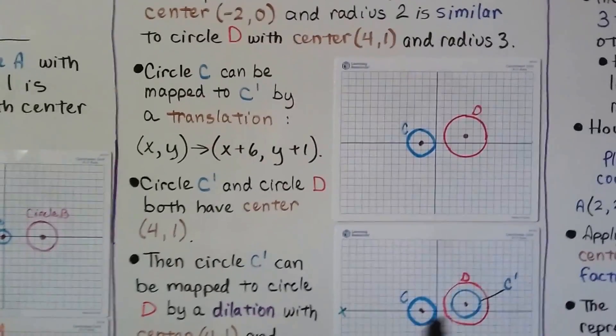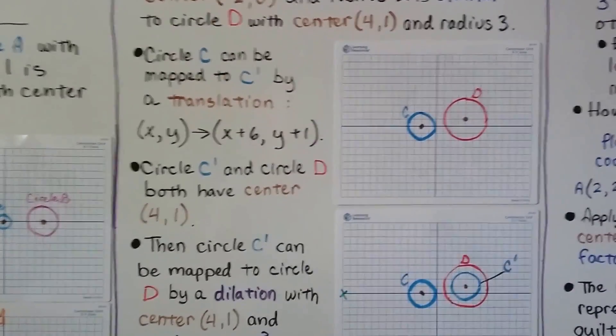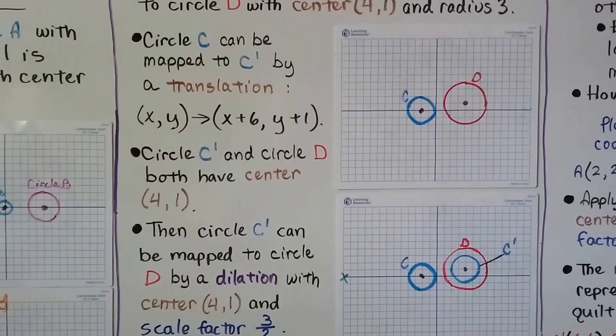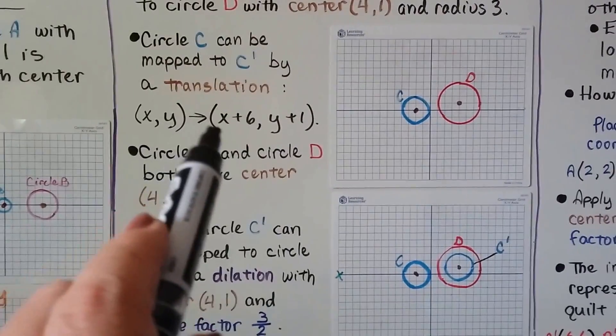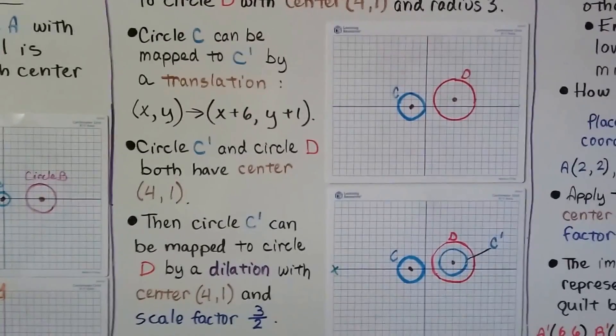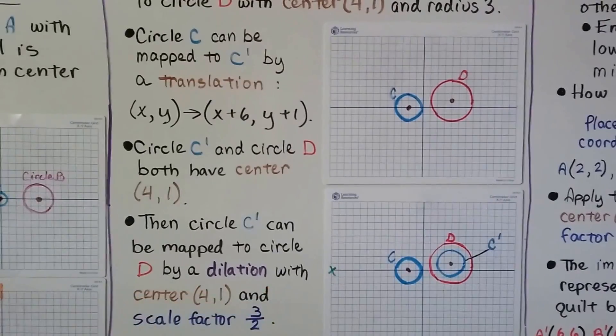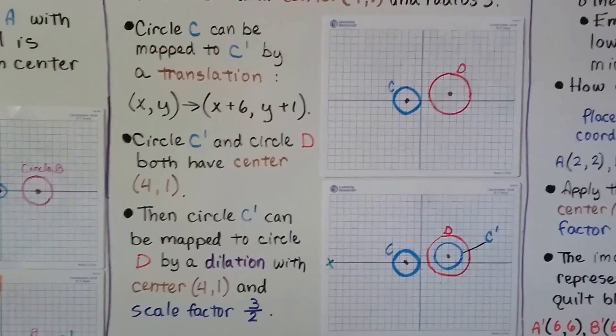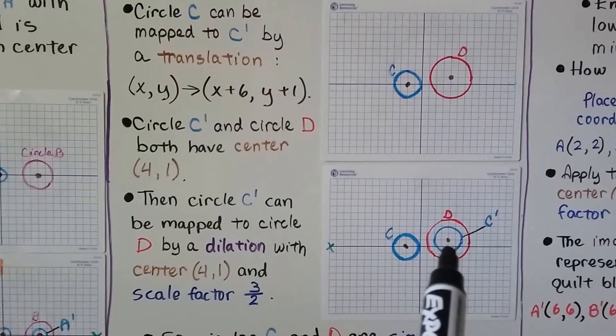Circle c can be mapped to c prime by a translation. The x and y values would translate to x plus six, y plus one. So it'd move over six and go up one. And circle c prime and circle d both have a center of four one.